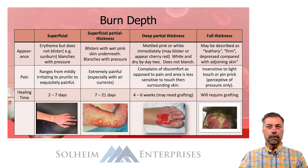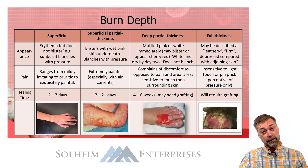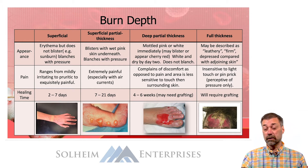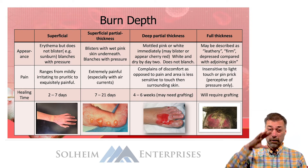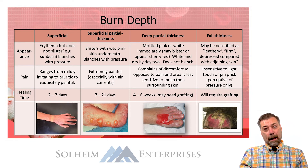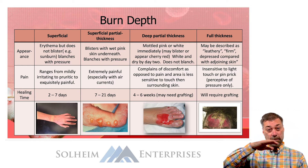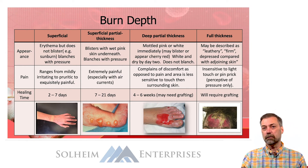A superficial partial thickness burn will not only be red but will blister, because now you've burned down into the dermis where blood vessels are involved, causing plasma leakage. There is still good circulation to the area, so it will blanch when you push on it. These are some of the most painful burns because the nerve ends are exposed and raw. They will heal — the basement membrane of the dermis is intact — but it can take anywhere from seven to 21 days.